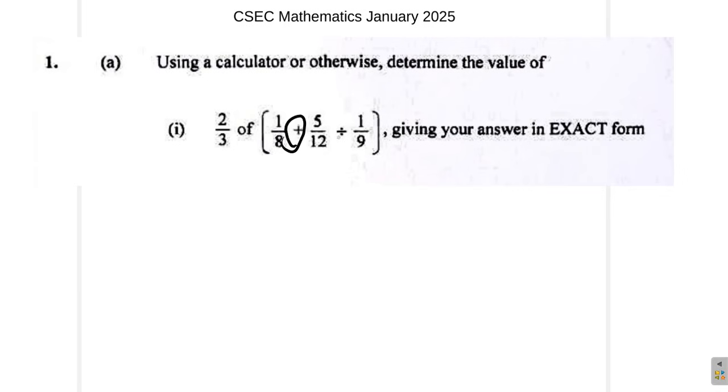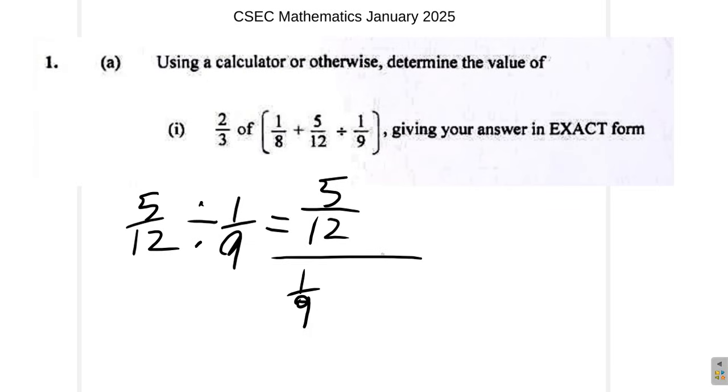Now, you have a plus and a divide here. In the order of priority, you do the division first. So you have 5 twelfths divided by 1 ninth. You can write this also as 5 twelfths over 1 ninth. When you are dividing a number by a fraction, it's the same as multiplying by the reciprocal of that fraction. So this is the same as 5 twelfths multiplied by 9 over 1 now.